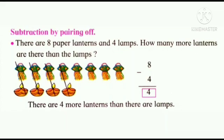Let us see few examples. As you can see in the picture, there are 8 paper lanterns and 4 lamps. How many more lanterns are there than the lamps? Before subtracting, let us equal the number of lantern with the lamps. 1, 2, 3 and 4. So, we have 4 pairs.